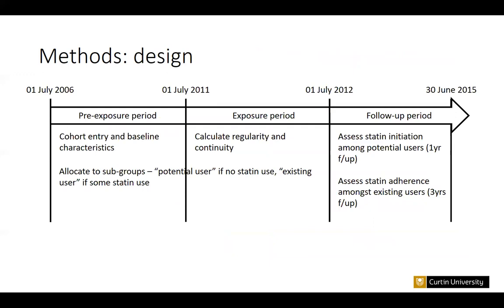A longitudinal design was used to minimise the risk of reverse causation. The regularity and continuity measures are assessed through a one-year exposure period. Prior to this, there's a pre-exposure period where cohort capture occurs, baseline characteristics are captured, and people are defined as either existing or potential users depending on their statin use. There is then a follow-up period after the exposure period where outcomes are assessed.